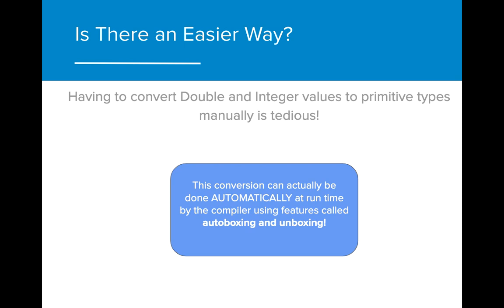Having to convert between object and primitive values is a lot of work. Luckily, Java has a way of recognizing when a wrapper object needs to be converted to a primitive and vice versa, and automatically makes that conversion happen. This automatic conversion process is called autoboxing and unboxing.